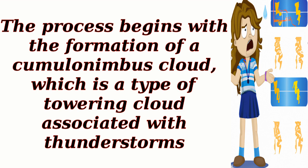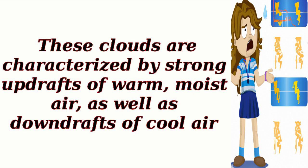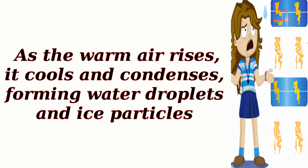The process begins with the formation of a cumulonimbus cloud, which is a type of towering cloud associated with thunderstorms. These clouds are characterized by strong updrafts of warm, moist air, as well as downdrafts of cool air. As the warm air rises, it cools and condenses, forming water droplets and ice particles.